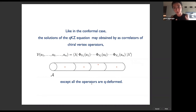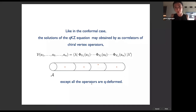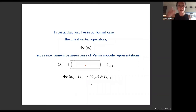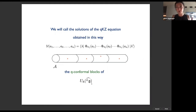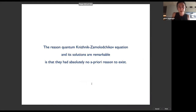Just as in the conformal case, solutions of the KZ equation can be obtained as correlators of chiral vertex operators; the same is true in this deformed case. You can get solutions of the qKZ equation by an analogous construction where everything is q-deformed. In particular, q-deformed chiral vertex operators act as intertwiners of Verma module representations, and by sewing you get correlators — which we'll call q-conformal blocks of the quantum affine algebra.